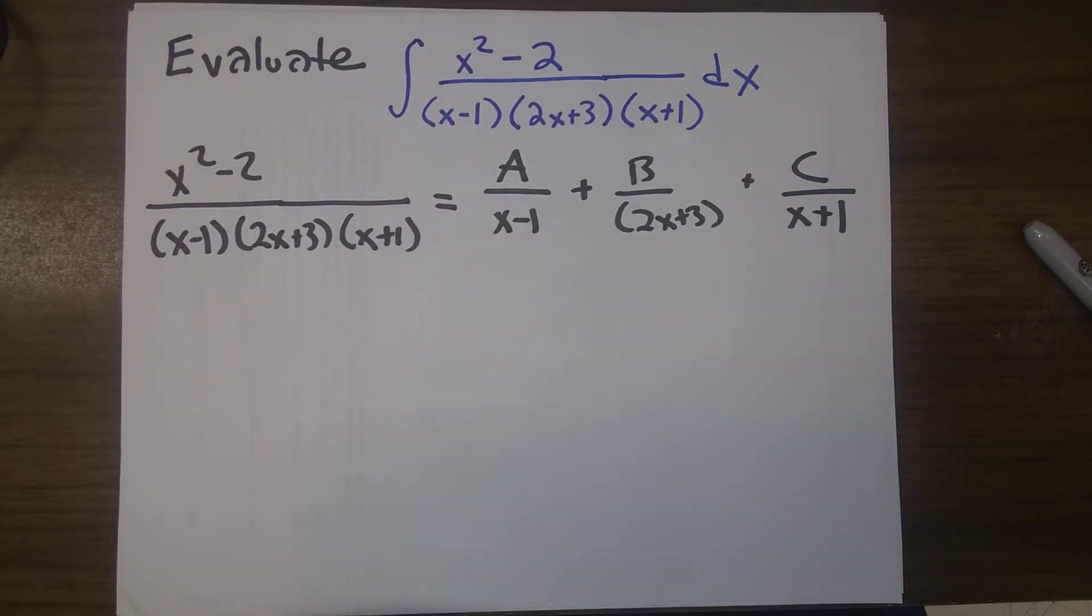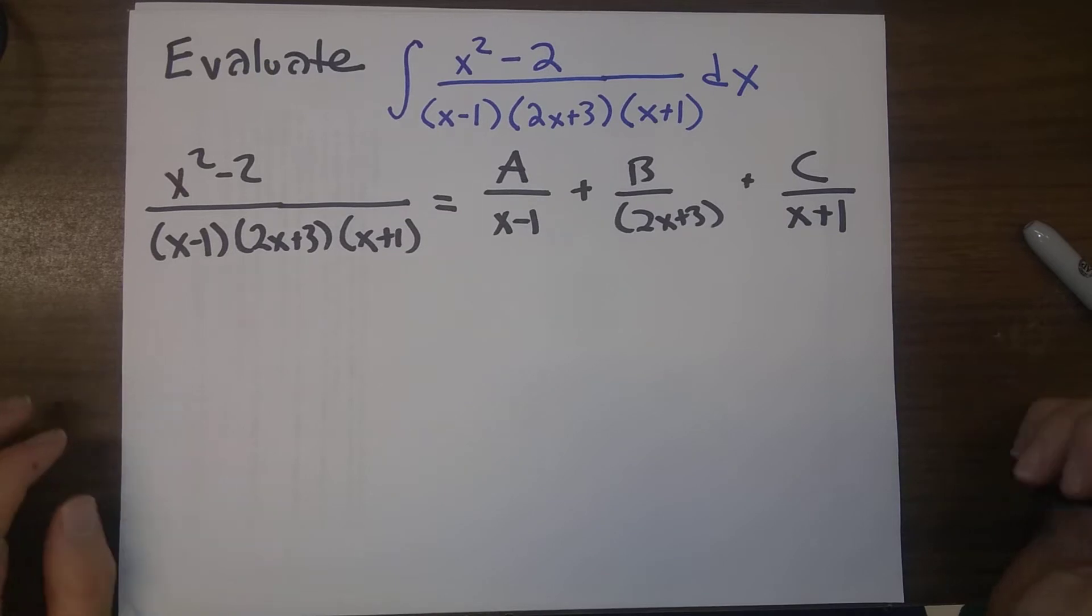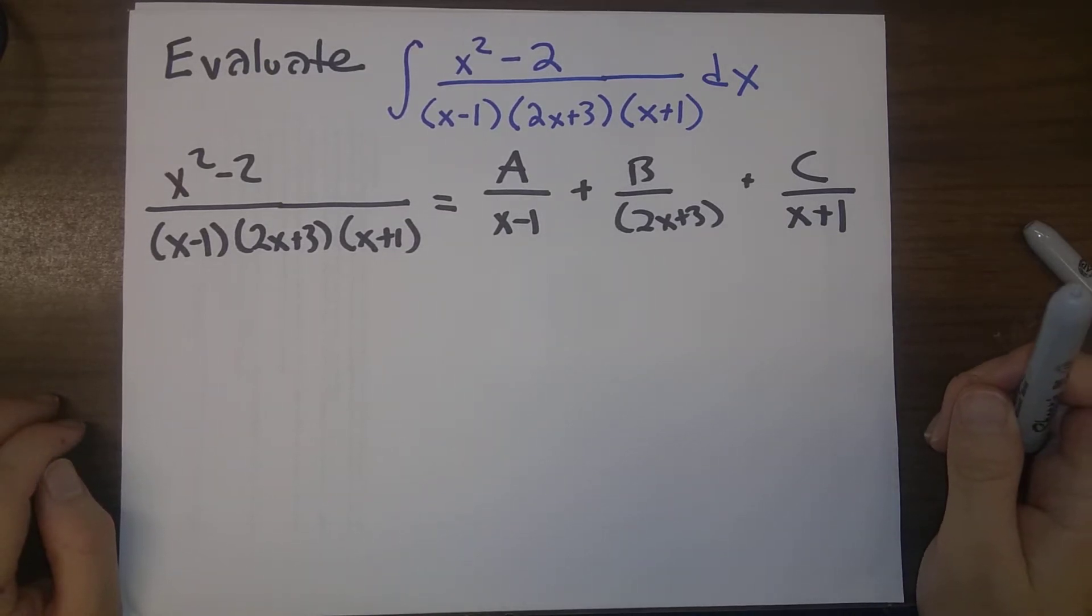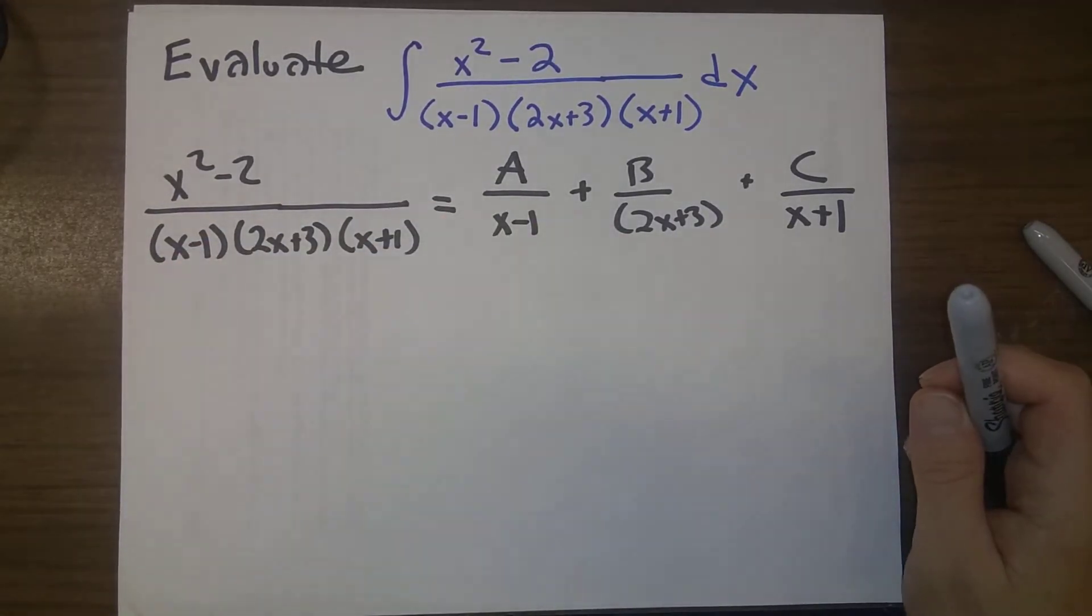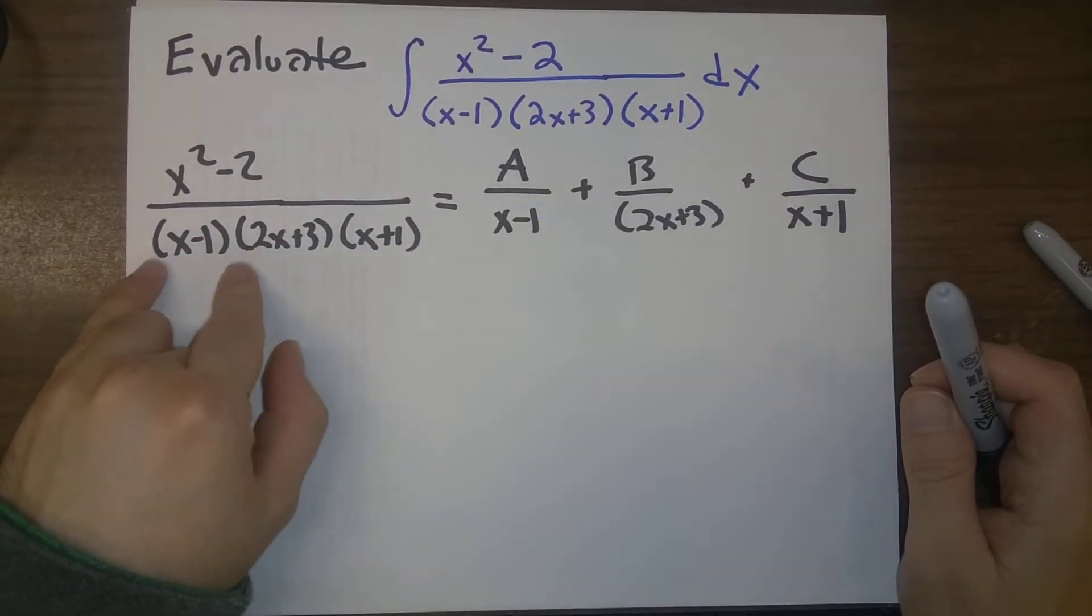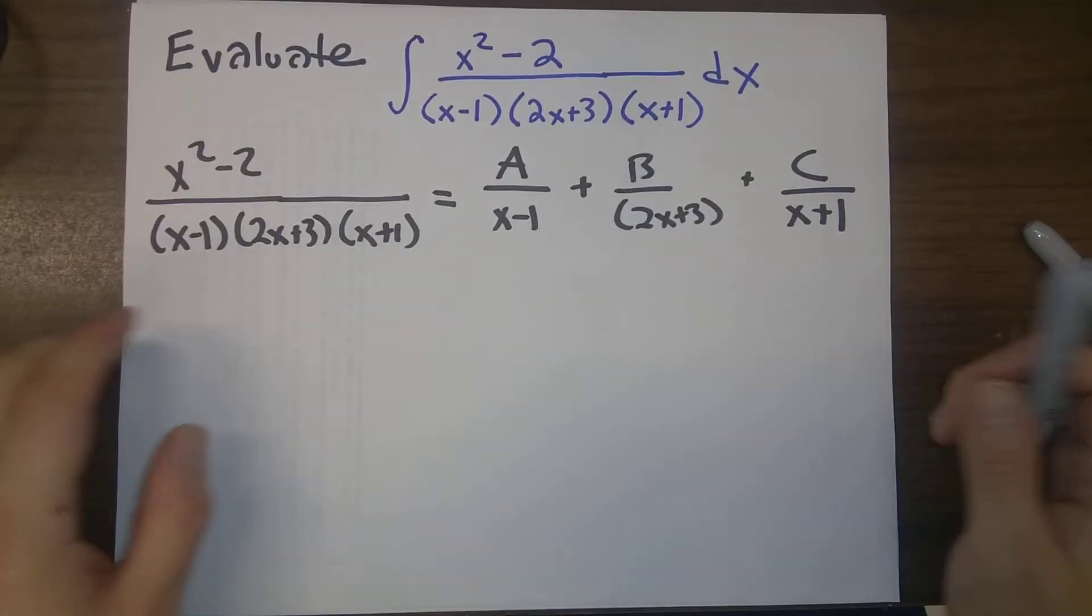And once again, our goal is we need to figure out what are A, B, and C. And same thing as before, we start off by cross-multiplying by x minus 1 and 2x plus 3 and x plus 1.